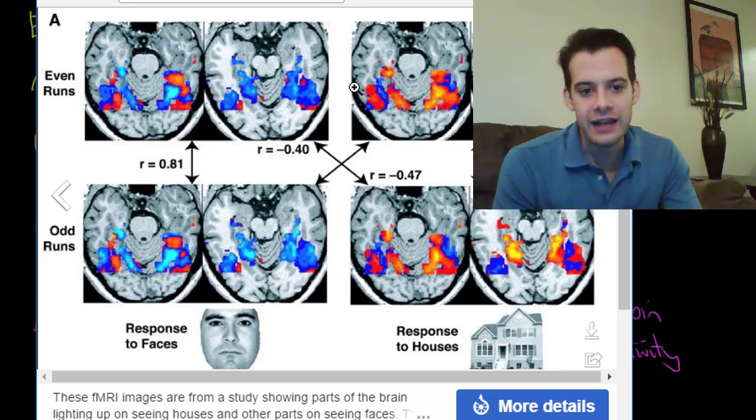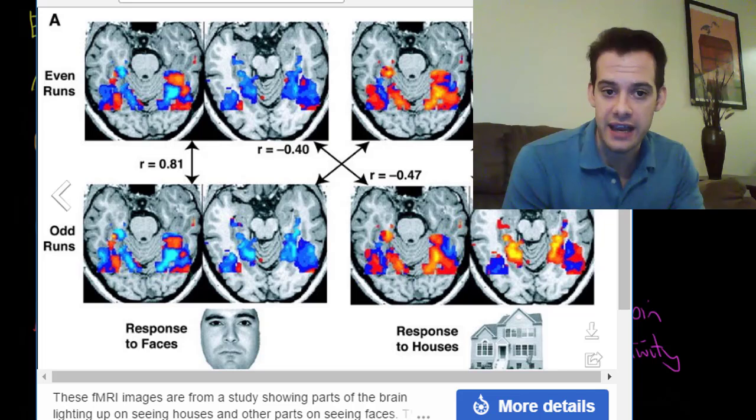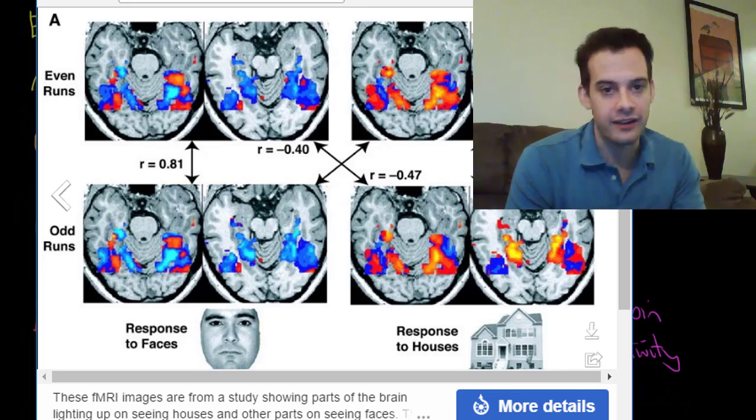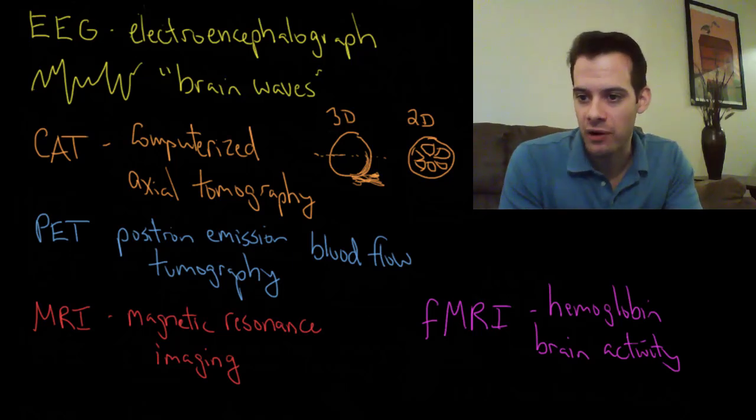Okay again you can see from these pictures this is more precise than we had with the PET scan in terms of specific areas but it's not super precise. We get a general idea of regions but we're not looking at individual neurons firing or anything like that. Okay so that's fMRI.